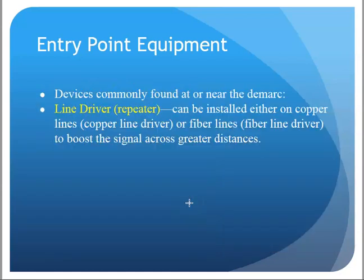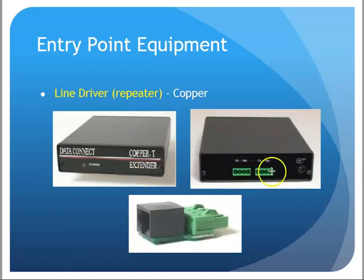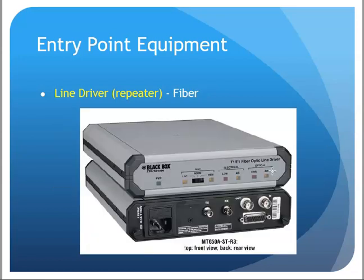You might also run into line drivers, which are essentially repeaters for a WAN signal. These can come in copper or fiber variations and are simply signal boosters from the provider to the customer site. Here are examples of copper line drivers and fiber line drivers boosting that signal out to the customer site.